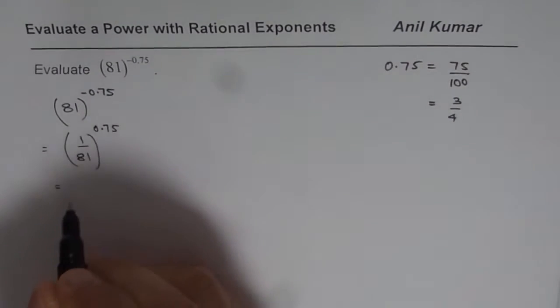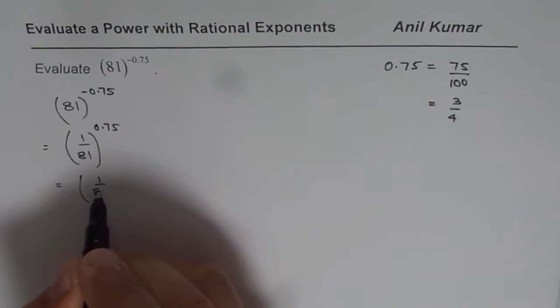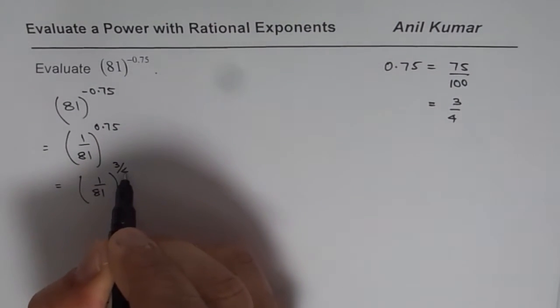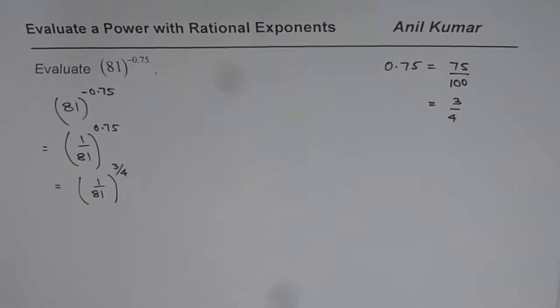So we'll use, instead of 0.75, 1 over 81 to the power of 3 over 4. So now we have to simplify this.